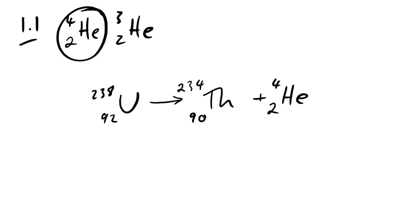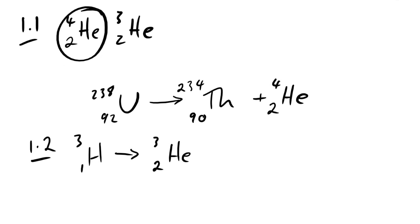Question 1.2: tritium decays into helium-3. Super heavy hydrogen goes to helium-3 — we're gaining a proton but losing a neutron for mass to stay the same. So a neutron turns into a proton and an electron, showing this is beta minus decay, and of course we also have our anti-electron neutrino.